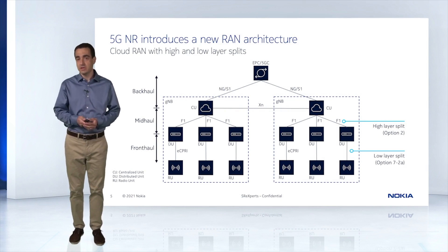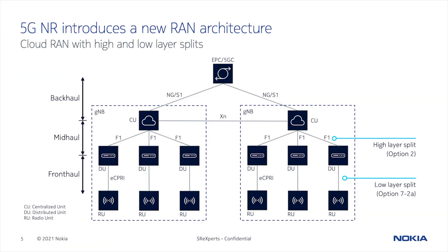Let's get into the technical part of the presentation. This is a slide that presents the new architecture of 5G with a special focus on the radio. The radio has been fully decomposed into three different elements: the RU, which implements the PHY and the RF layer; the DU, that implements the PHY layer all the way to the RLC; and the CU, that implements the PDCP and IP layers.